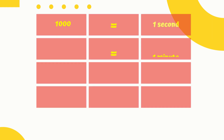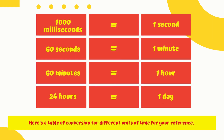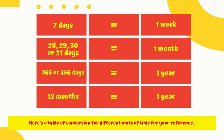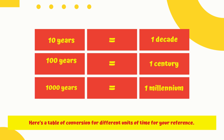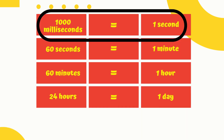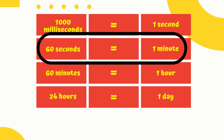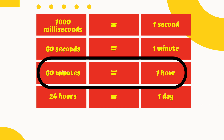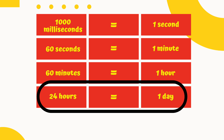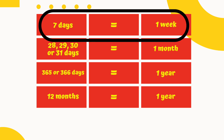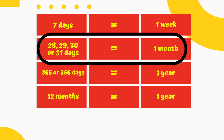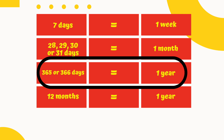Here is a table of conversion for different units of time for your reference. 1,000 milliseconds is equal to 1 second. 60 seconds is equal to 1 minute. 60 minutes is equal to 1 hour. 24 hours is equal to 1 day. 7 days is equal to 1 week. 28, 29, 30, or 31 days is equal to 1 month. 365 or 366 days is equal to 1 year.